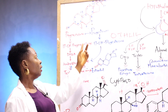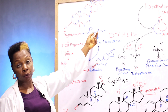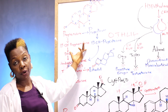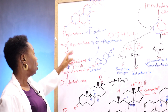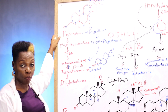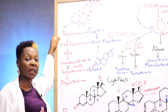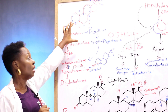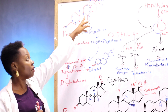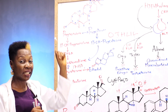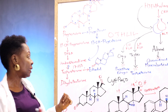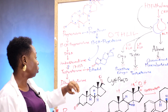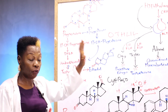Pregnenolone has two fates: progesterone can be synthesized from it, or 17-hydroxypregnenolone. From 17-hydroxypregnenolone, you have DHEA. Pregnenolone is the first compound synthesized in the steroidogenic pathway — it is not a hormone, but it is the first compound and the reaction is the rate-limiting step. Pregnenolone can be converted to progesterone, which is the first hormone in the steroidogenic pathway.